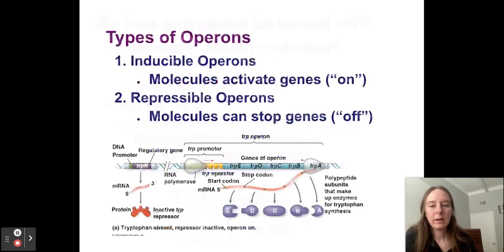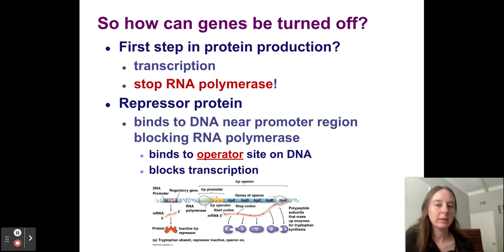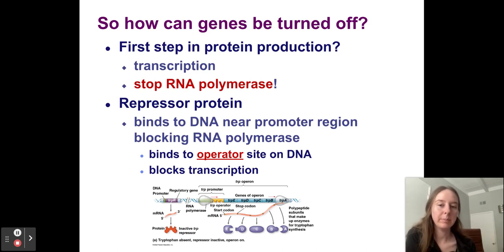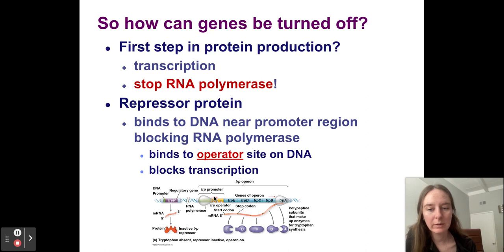Let's start with repressible operons — how can we turn genes off? To build proteins from genes, we need to transcribe DNA into messenger RNA using RNA polymerase, which binds to our DNA at the promoter and builds messenger RNA by bringing in new nucleotides. We can use something called a repressor protein that binds to the DNA near the promoter region at the operator, and it stops RNA polymerase from building messenger RNA. It basically blocks RNA polymerase from doing its job.